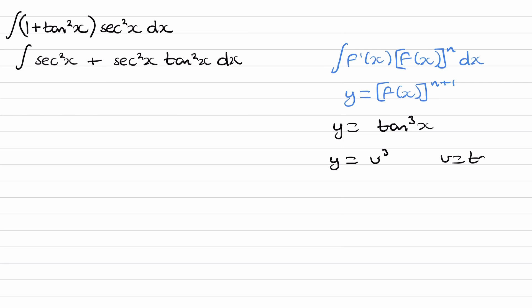So use the chain rule. u is equal to tan x. So let's differentiate each of these parts: 3u², du/dx is sec²x. Multiply these two things together. We end up with 3u². So u², remember, is tan². So this becomes 3tan²x sec²x.